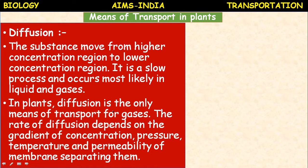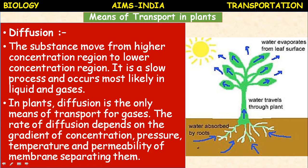The rate of diffusion depends on the gradient of concentration, pressure, temperature, and permeability of the membrane separating them. Gradient of concentration, pressure, and temperature are the three main factors. Water enters into the plant by osmosis, whereas mineral salts enter by the process of diffusion.